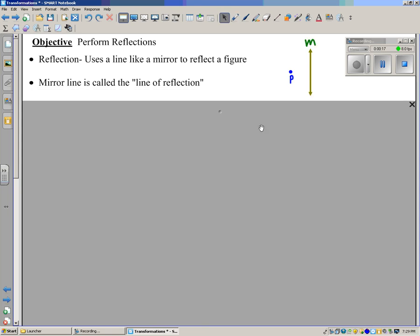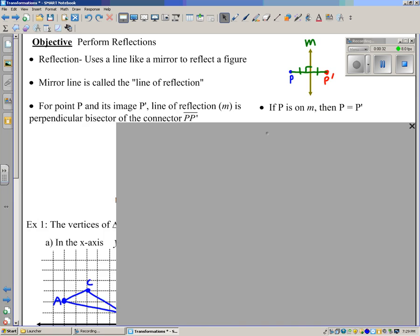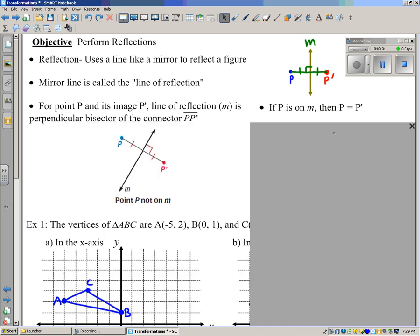Here's an example of reflecting the point P across M to get P prime. Notice that if we connect P and P prime with a line segment, M is the perpendicular bisector of that segment. And that will happen no matter what your line of reflection is.